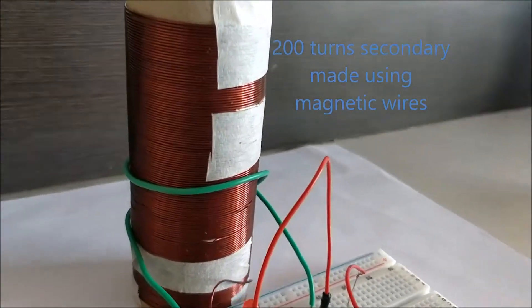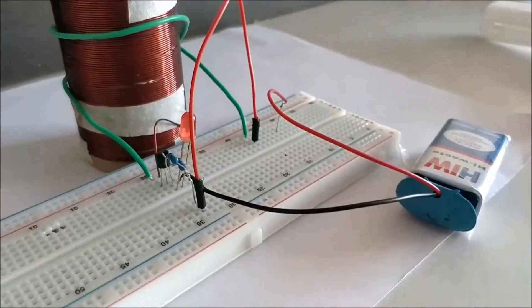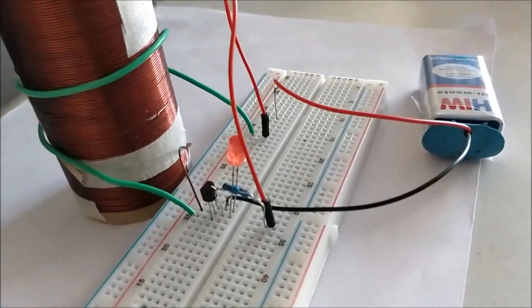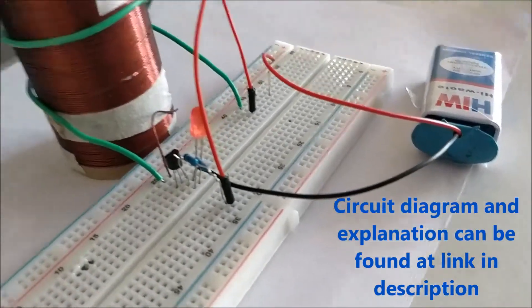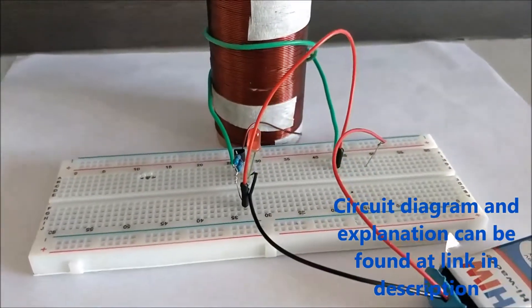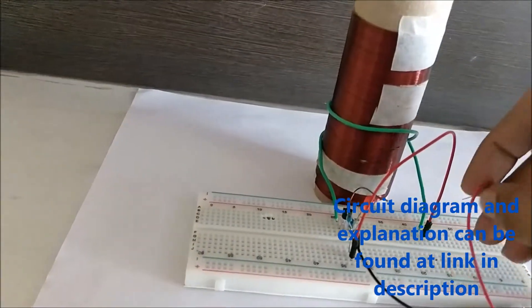This has 200 turns and it is made using a 0.6 mm enamel wire. The circuit is very simple, you can simply make it using a breadboard.